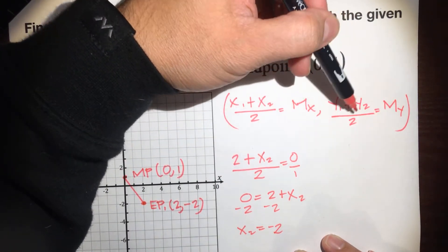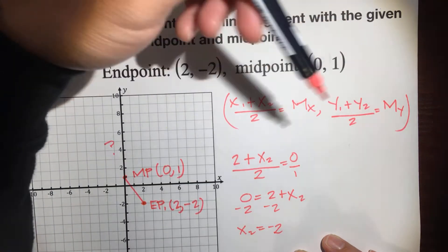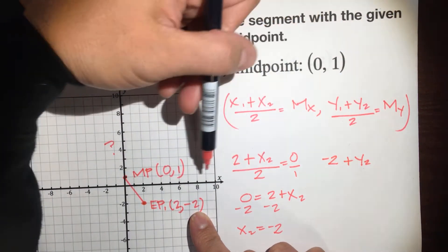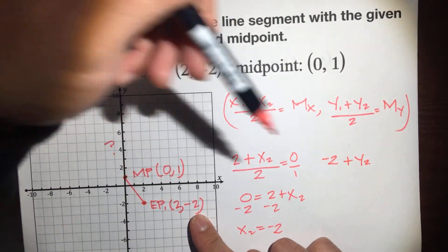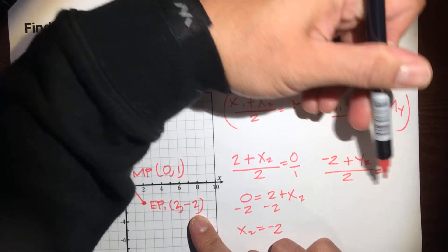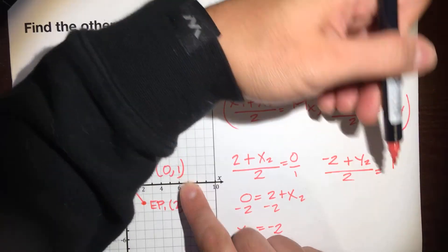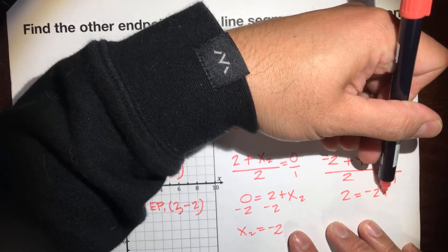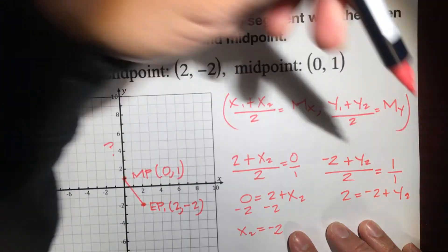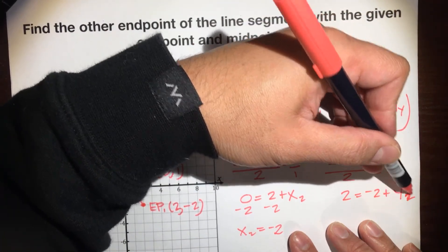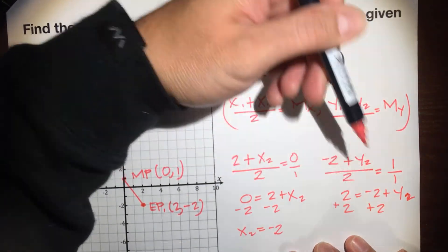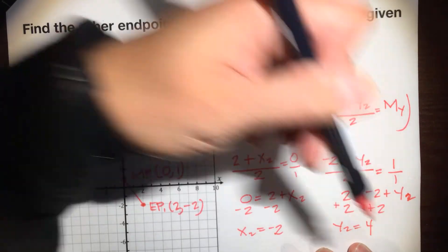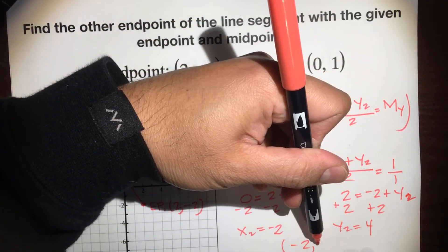And we're going to do the same with this to get the y value of the other endpoint. The y value of our first endpoint is negative 2, so: (-2 + y2) / 2 = 1. We put the invisible 1 under, cross multiply — 2 times 1 is 2, equals negative 2 + y2. Note that y2 doesn't mean it's an exponent; it's the second y value. We add 2 to both sides, and 2 plus 2 is 4, so the y value of the second endpoint is 4. So our final answer would be (-2, 4).